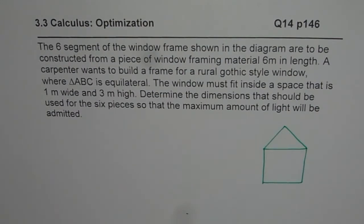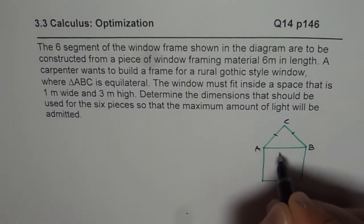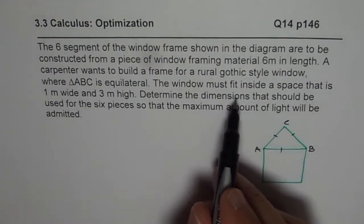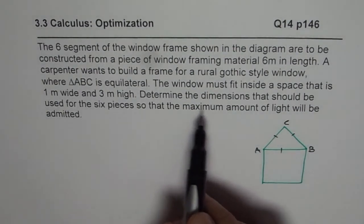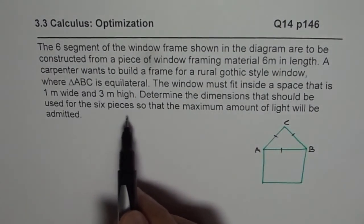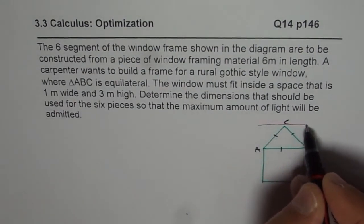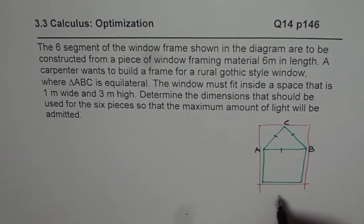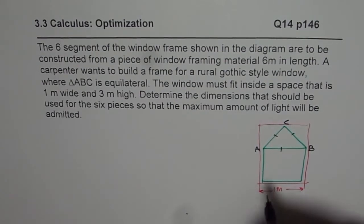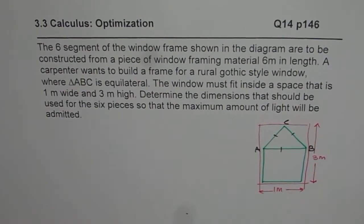A carpenter wants to build a frame for a rural gothic style window where triangle ABC is equilateral. Let me label this as ABC. So that is a triangle which is equilateral, all equal sides. The window must fit inside a space that is 1 meter wide and 3 meters high.